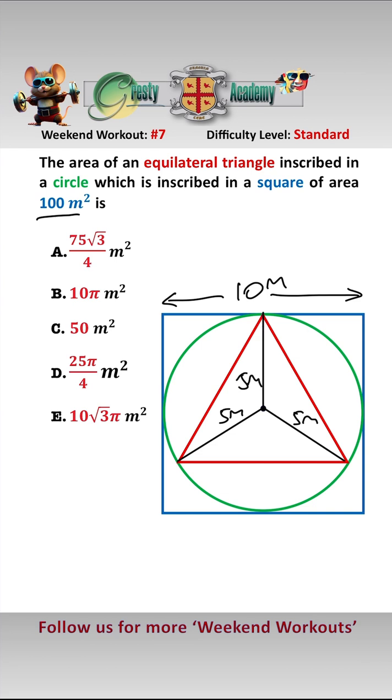So now looking at the equilateral triangle, we know this angle here is equal to 120 degrees, because it's 360 degrees in a circle. And we want to work out the area of this triangle here using area equals half AB sine C.